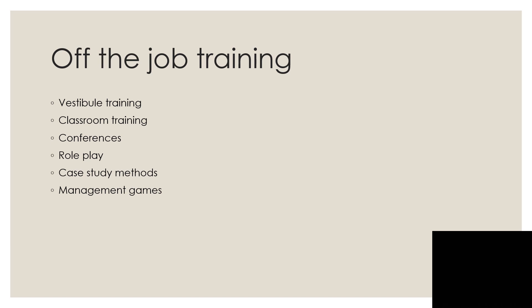The next off-the-job method is classroom training. Classroom training is the traditional way of education, which places the trainee in a classroom. The main aim is to take the employee away from his working environment, mix him with people in a similar position, bring about a change in his attitude and point of view, and make him capable of looking at problems differently.